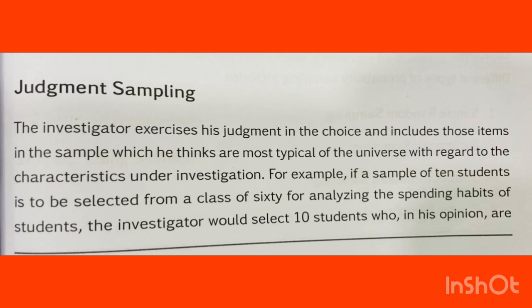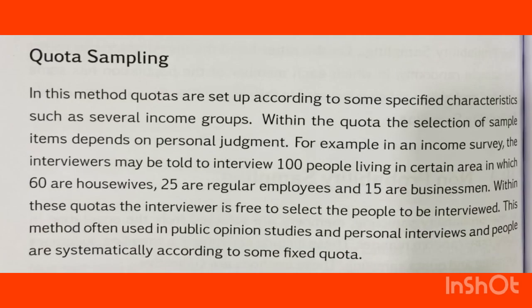The second method is Judgment Sampling, where the investigator exercises his judgment in choosing items that are most typical of the universe with regard to the characteristics under investigation. For example, if a sample of 10 students is selected from a class of 60 to analyze spending habits, the investigator would select 10 students based on his opinion.